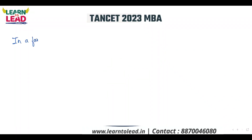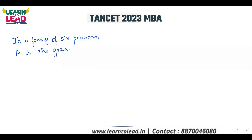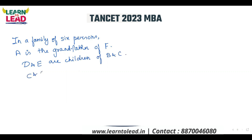In a family of 6 persons, A is the grandfather of F. D and E are children of B and C.